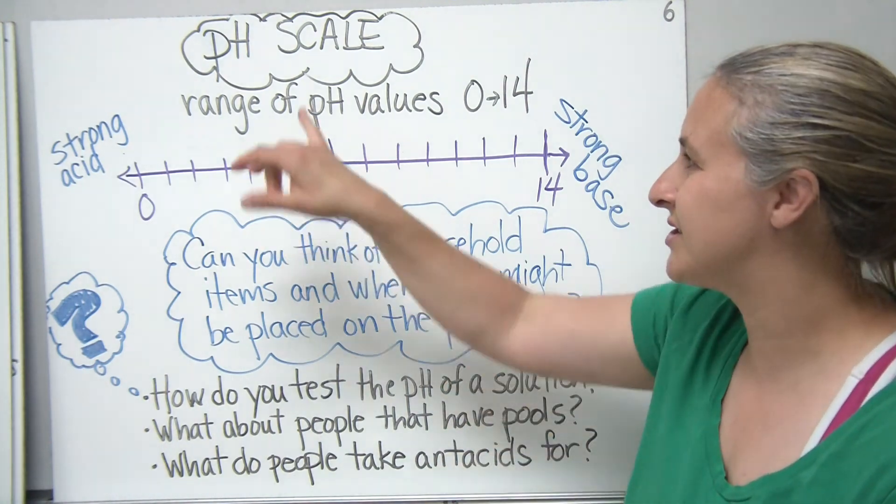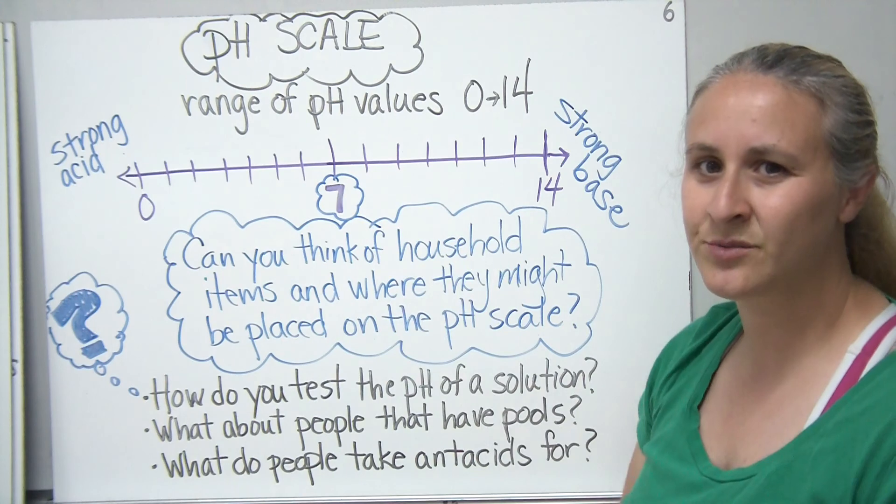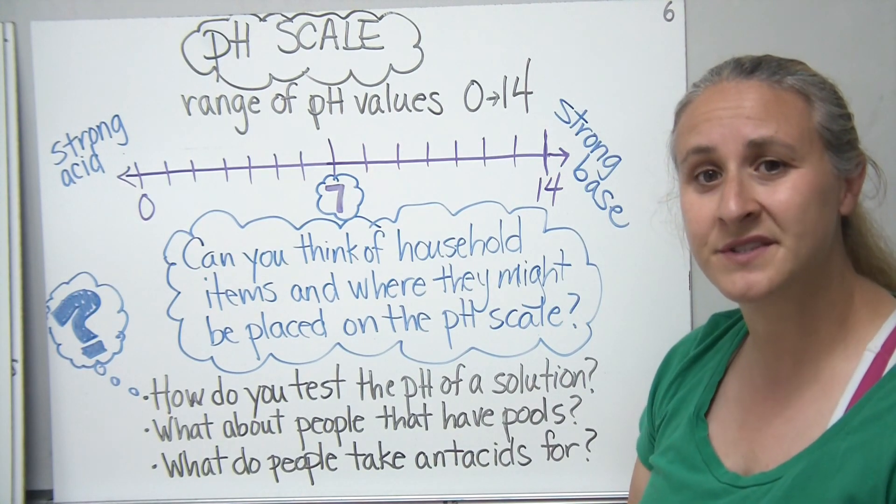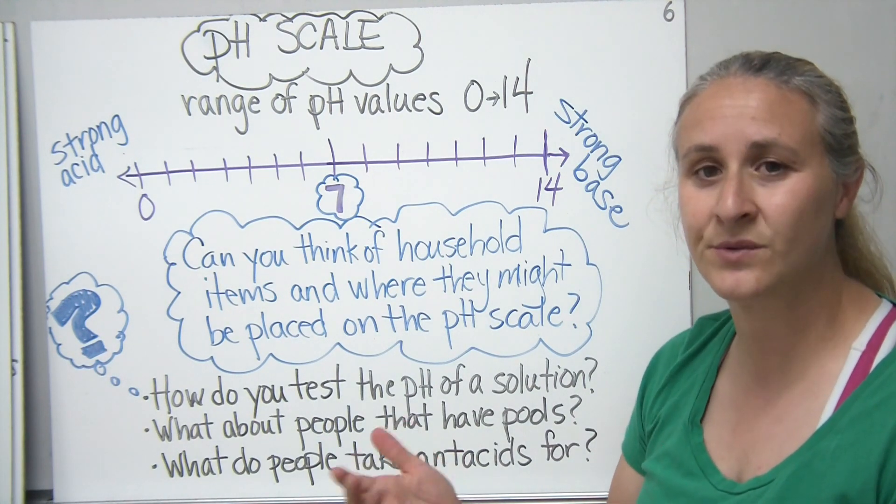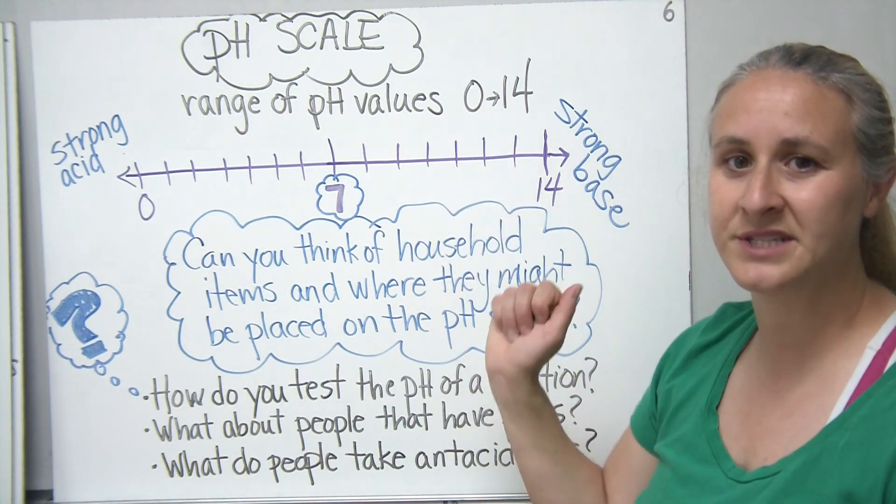Or where do they typically fall on the pH scale? And the pH scale is really just the range of pH values that you would find for a substance or a liquid. And it ranges from 0 to 14.